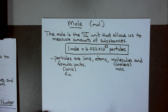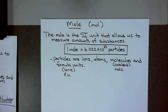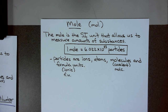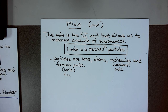One mole is equal to that number. Think of it the same way that you think of a dozen. If I say one dozen, you automatically think 12. So one dozen eggs means 12 eggs, one dozen ping pong balls means 12 ping pong balls. If you have one mole of ping pong balls, you have 6.022 times 10 to the 23rd ping pong balls. It just tells you how much of that thing you have.